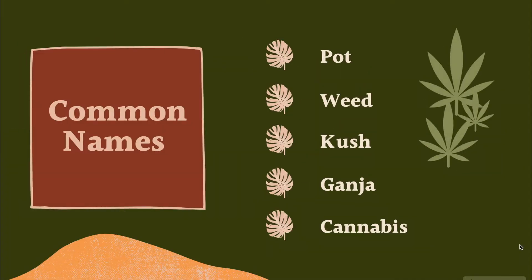Marijuana has a lot of different names. You may hear these in school, from friends, online, in music, or on TV. Marijuana's nicknames include pot, weed, kush, ganja, and cannabis — and those are just some of them. There are dozens and dozens more, some that maybe even I haven't heard of.